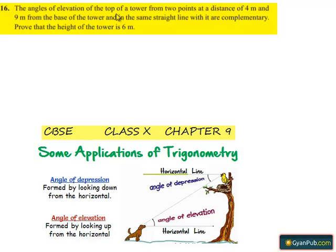Coming to the 16th question. Angle of elevations of top of the tower from two points at a distance of 4 meters and 9 meters from the base of the tower and in same straight line with it are complementary. Prove that height of the tower is 6 meters.